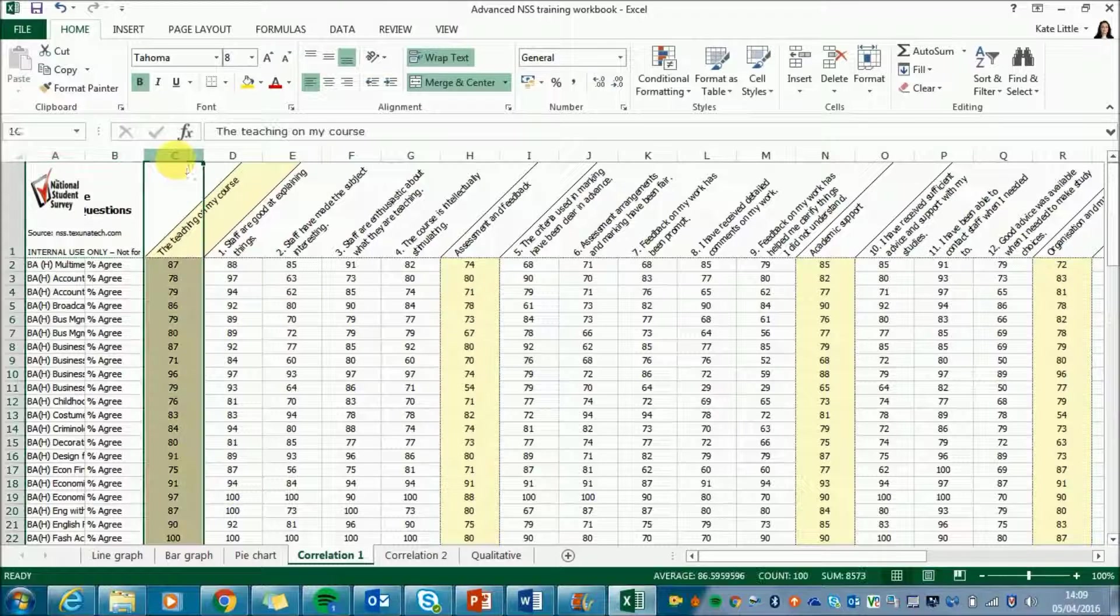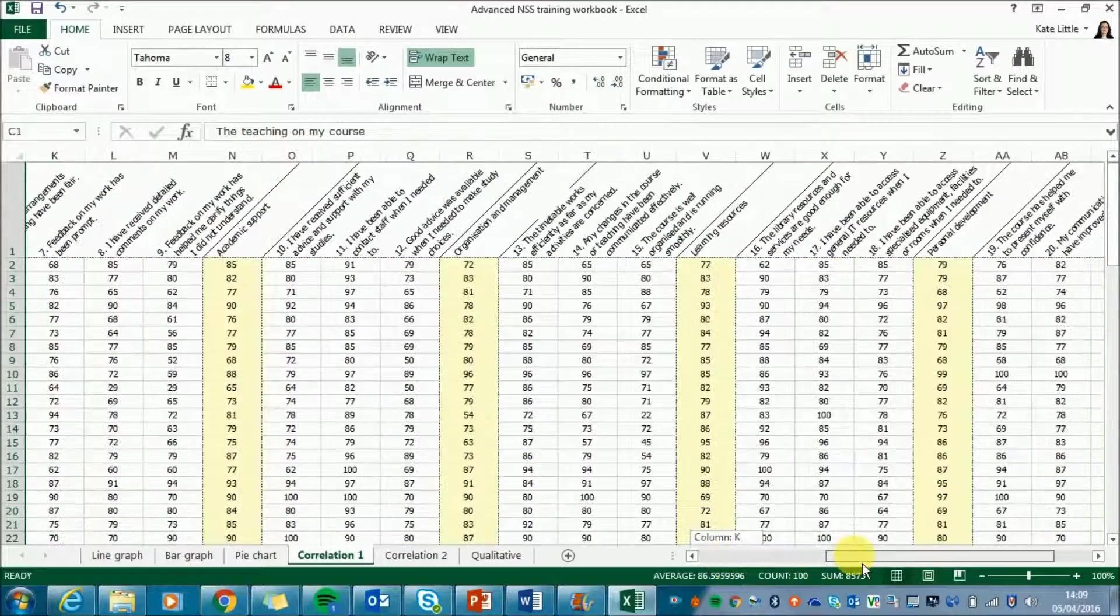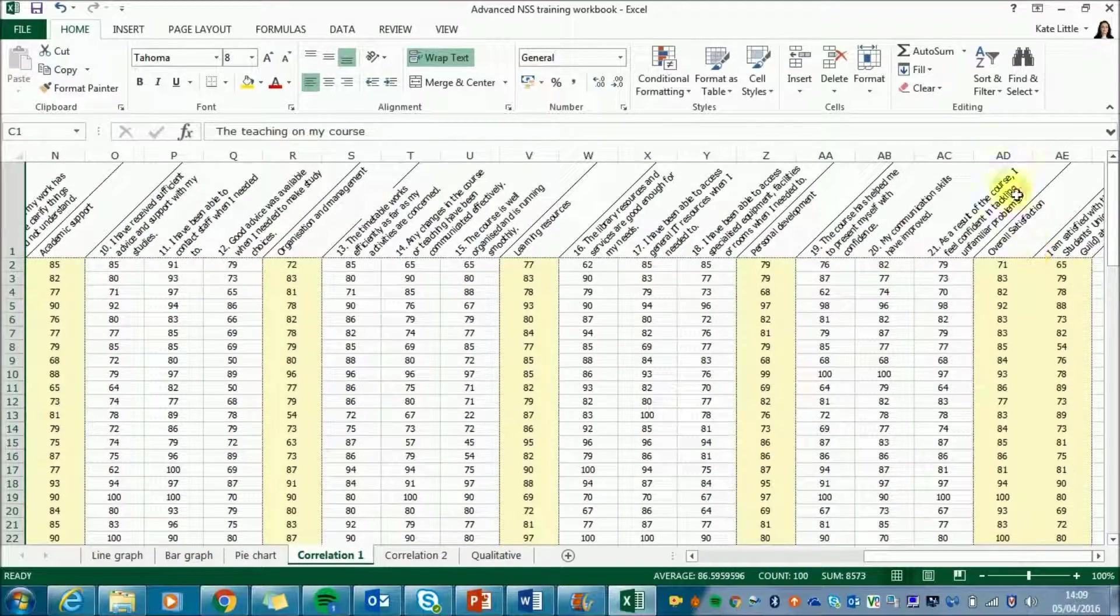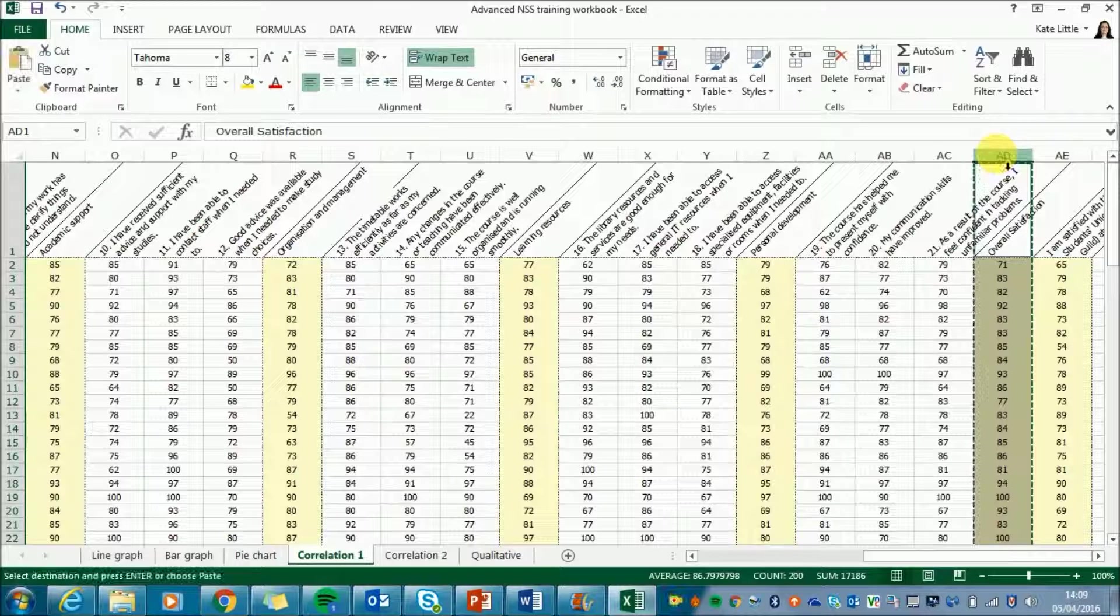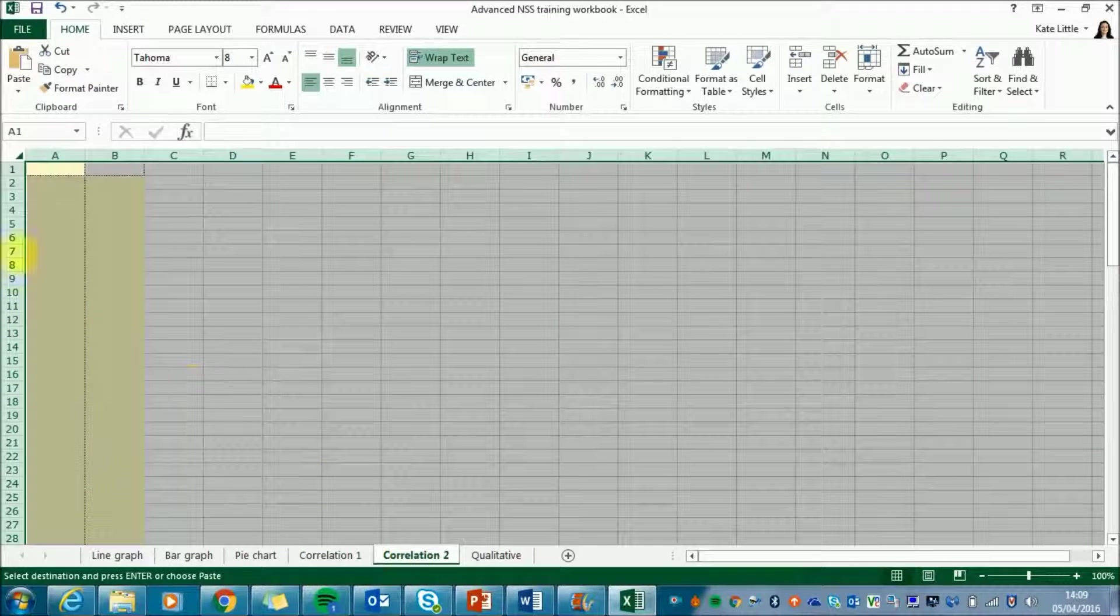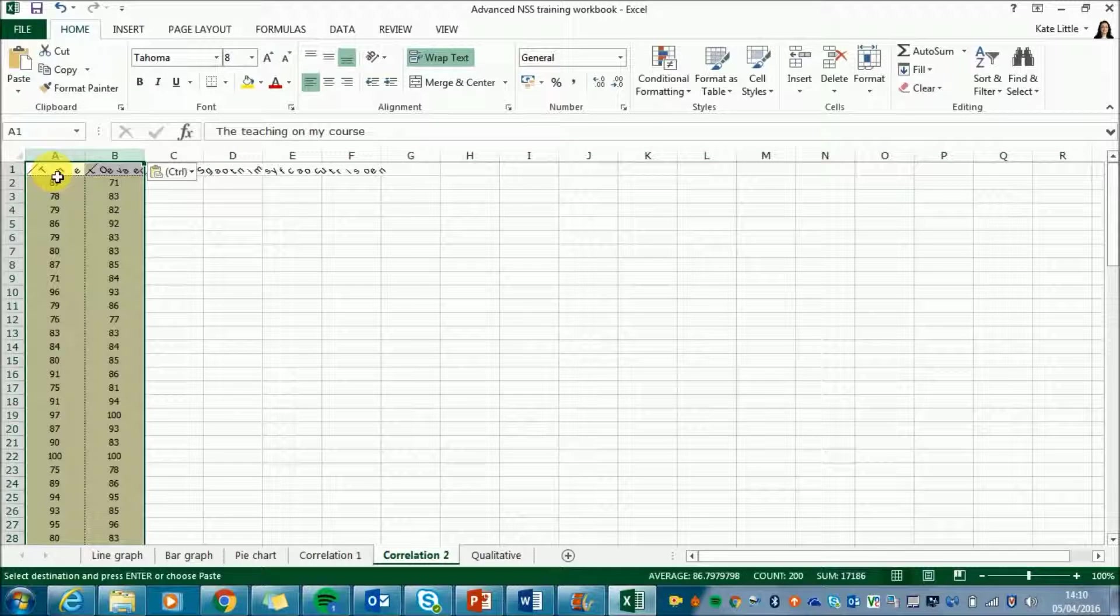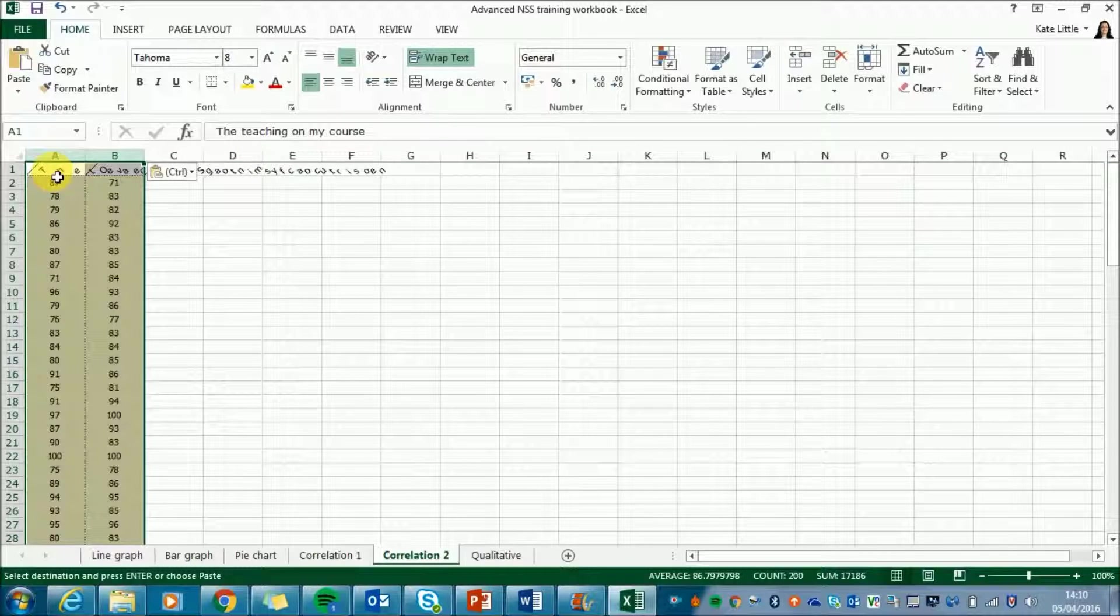So for this we want the Teaching on my course column and if I scroll across, hold control, I want the overall satisfaction column as well. If I copy those and paste them into the sheet labelled Correlation 2. I've not copied across the course titles because we don't need them for the purpose of this analysis.